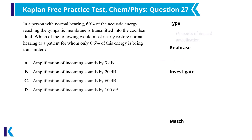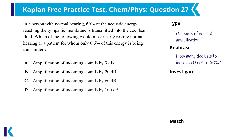The answer choices for question 27 all mention amplifying sounds by different numbers of decibels. Before I even read the question, this indicates some commonly tested content knowledge. The question boils down to: what amplification would turn 0.6% of the energy into 60%? My knowledge of the logarithmic nature of the decibel scale immediately tells me to first consider what factor we are multiplying by to get from 0.6 to 60% — and that means multiplying by 100.